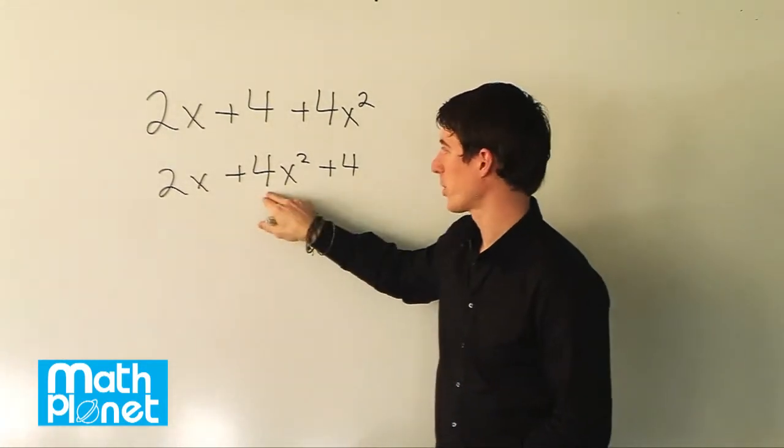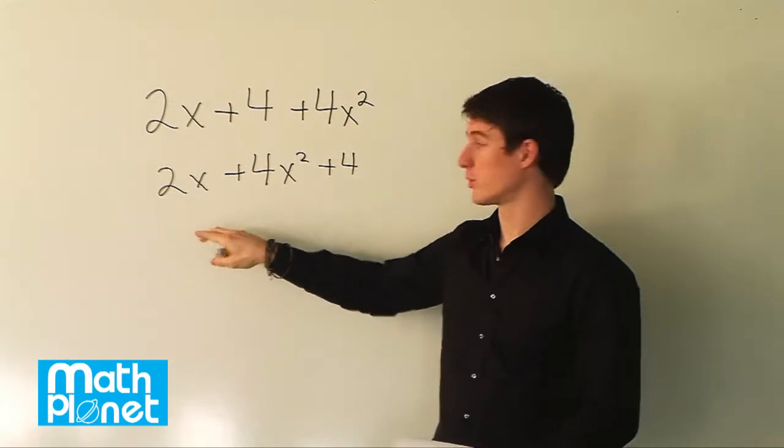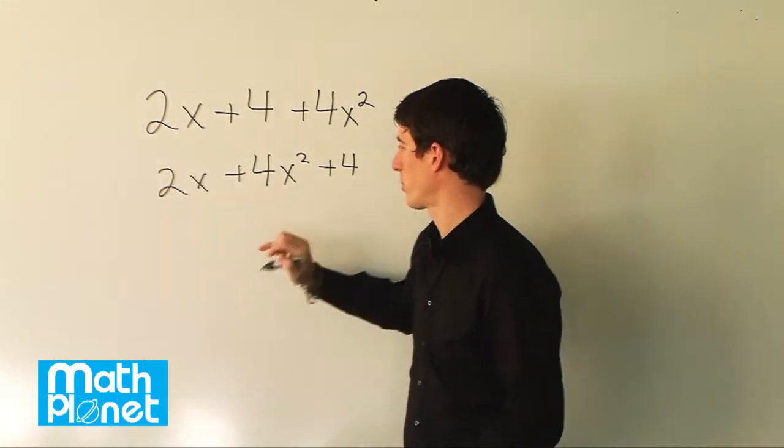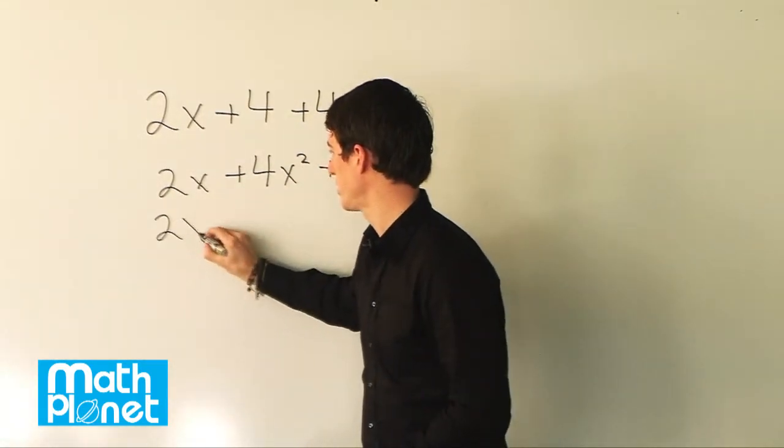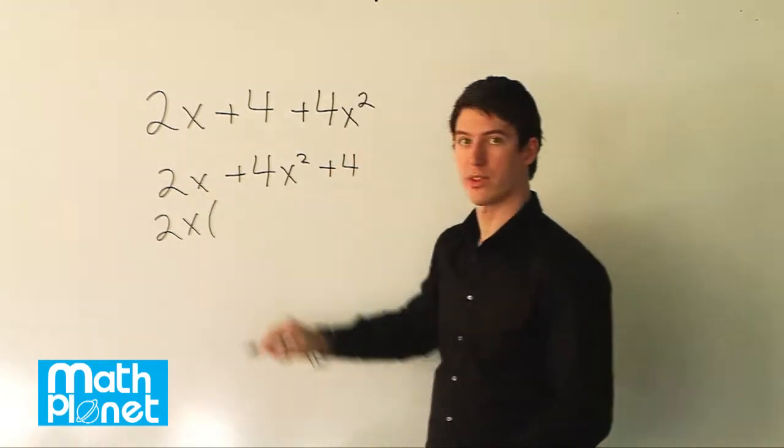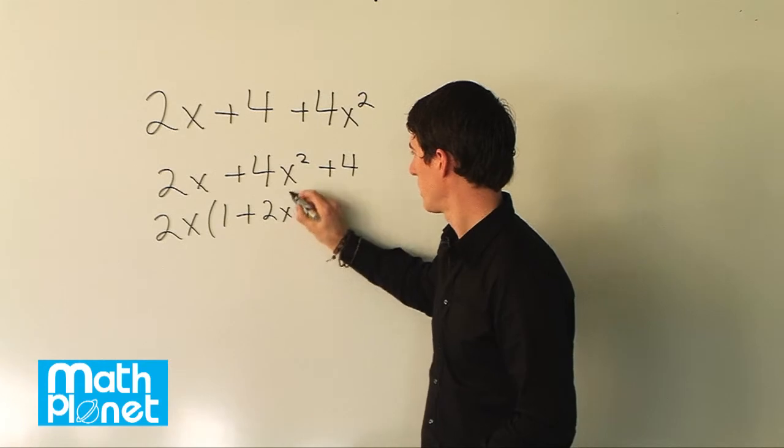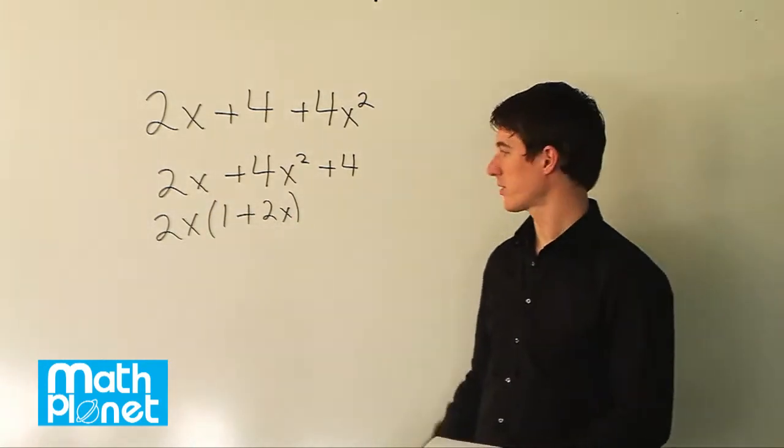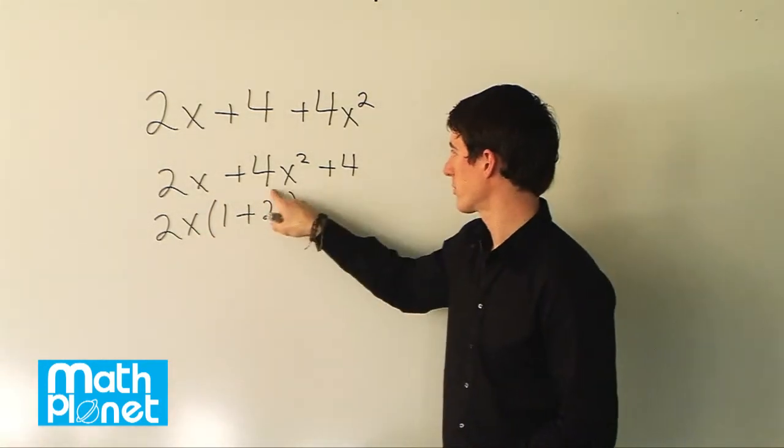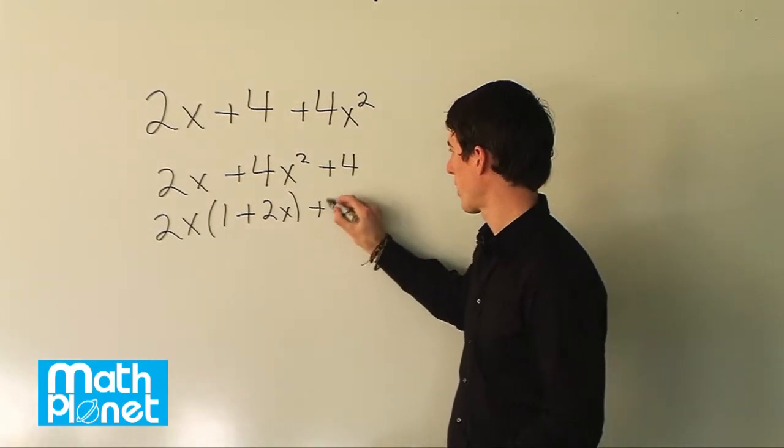However there's also a 2 and a 4 here which have a common factor of 2. So we can actually factor out a 2x from both of these. So we can say 2x times the quantity, what's left now is 1 plus 2x. So 1 times 2x is just 2x, 2x times 2x is 4x squared, and we still have our plus 4 here.